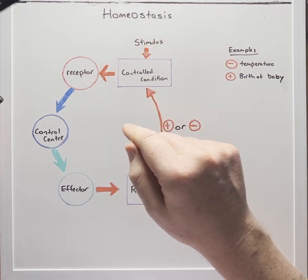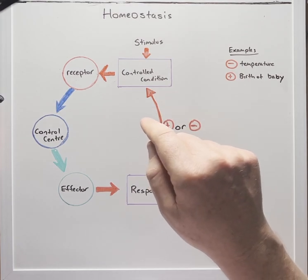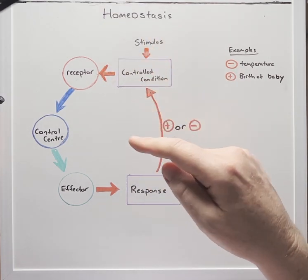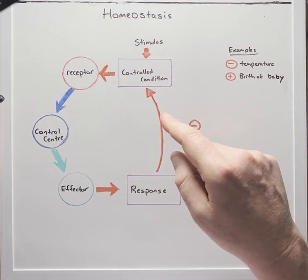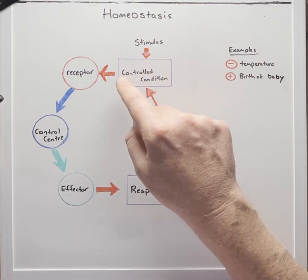Homeostasis is a compound word meaning homeo, similar, stasis, standing still. So homeostasis is a regulating process to maintain the body's internal environment in response to a change in a controlled condition.